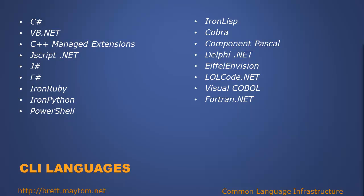CLI languages. At the time of doing this screencast, there are approximately 60 common language infrastructure compliant languages. These include some of Microsoft's languages: C#, VB.NET, and C++ managed extensions. There are also functional programming languages such as F#, and non-Microsoft languages such as IronRuby, IronPython, IronLisp, Korba, Delphi.NET, and Fortran.NET. These are only a few.